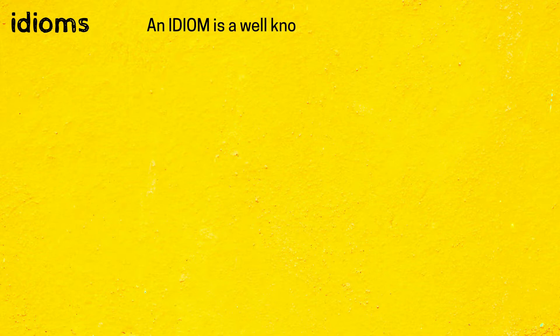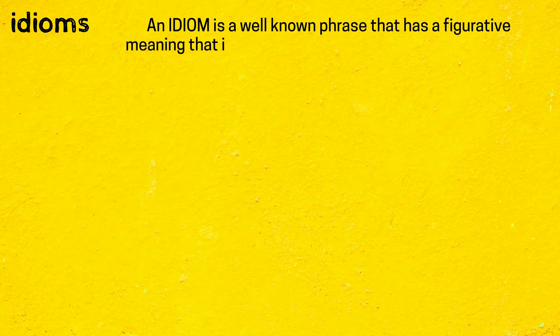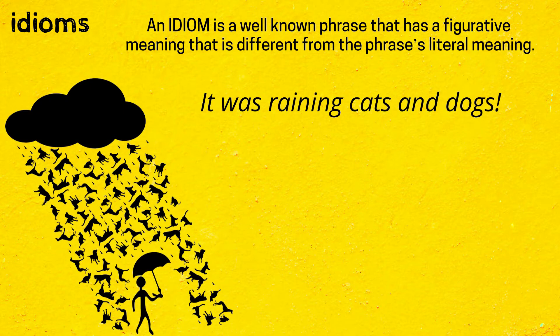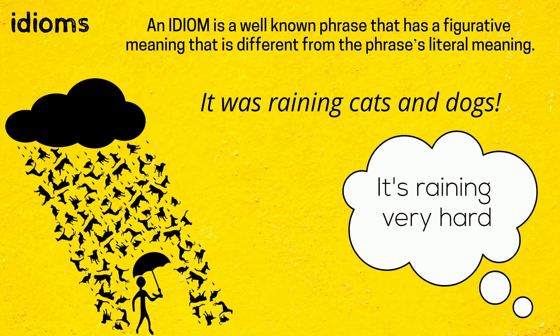An idiom is a well-known phrase that has a figurative meaning that is different from the phrase's literal meaning. For example, if you hear somebody say it was raining cats and dogs, it doesn't really mean there were cats and dogs falling from the sky. It means it's raining very hard.